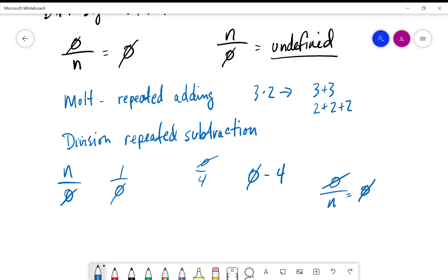That's why this is undefined: because there's no way for us to ever reach an end product. Hopefully that explains a little bit of why we cannot have zero in a denominator.